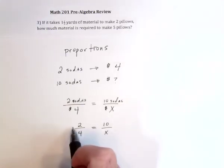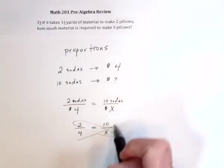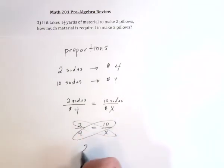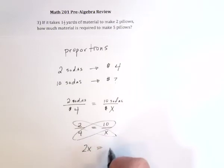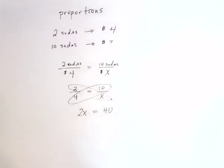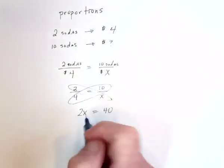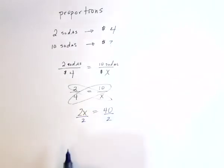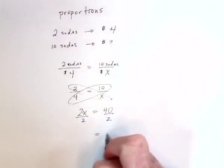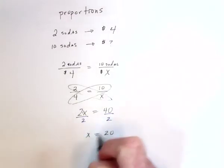And then after that, cross multiply. So this direction would give me two x. This direction, four times ten is forty. Then there's just one small step. That is, to get rid of this two, you divide both sides by two. Since right now it's multiplying, to get rid of it you have to do the opposite. Divide by two, divide by two, forty divided by two is twenty dollars.